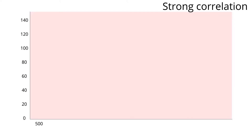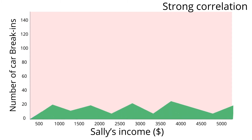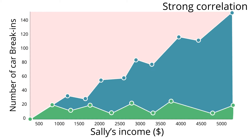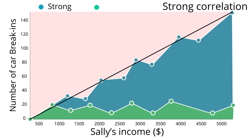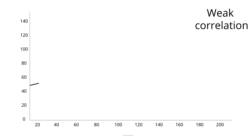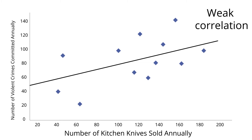One aspect of correlation measures the strength of a relationship between variables. If two variables are strongly correlated, that means they have a very close relationship — like the relationship between Sally's income and the number of thefts. If you knew how much money Sally took home on Tuesday, you'd probably come up with a very close guess as to how many thefts occurred that day. Meanwhile, if two variables show a weak correlation, the relationship is a little more distant. The number of kitchen knives sold per year and the number of violent crimes per year may weakly correlate, for example — most people are just trying to cut up vegetables.